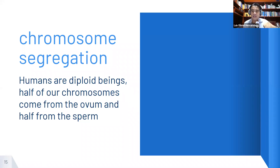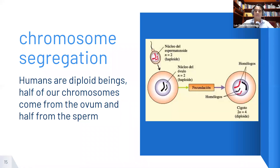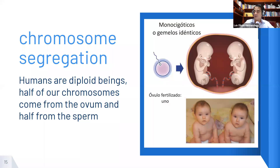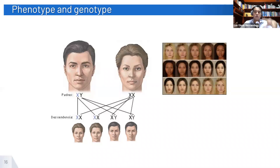To understand this, let's take the example of homozygous twins. This type of twins share the same genetic information and their phenotype is identical at birth. It is necessary to differentiate between phenotype and genotype: the genotype is how the information is encoded in DNA, while the phenotype is the reflection of that information — what I look like.